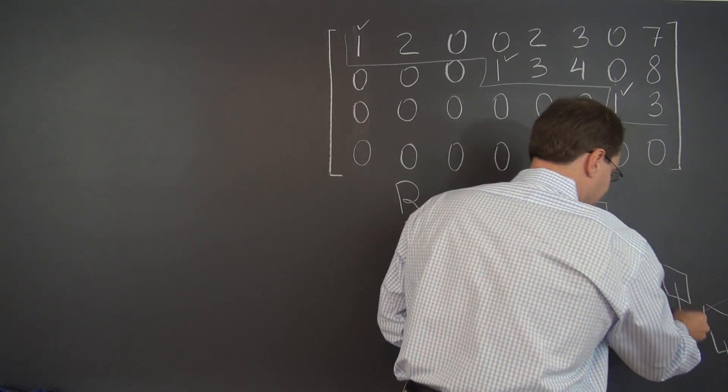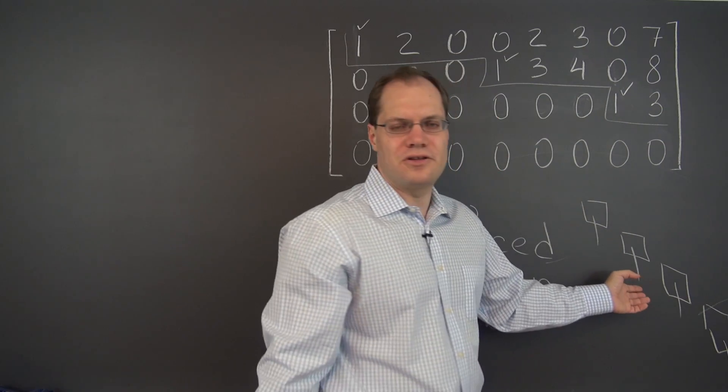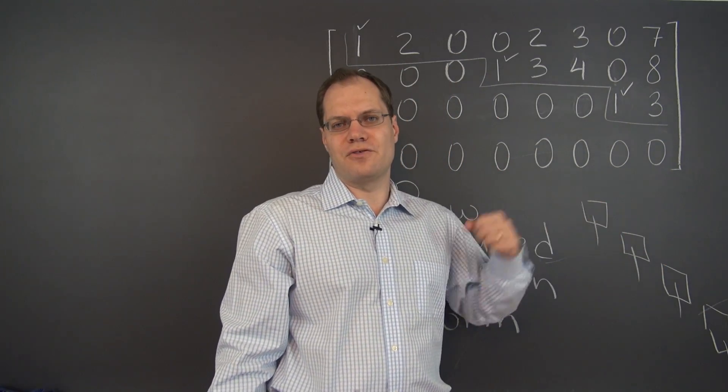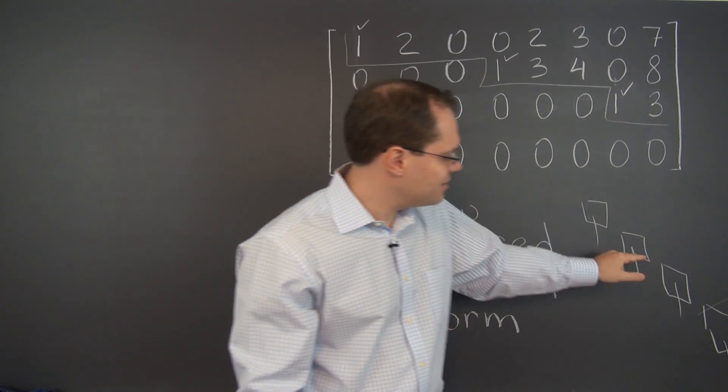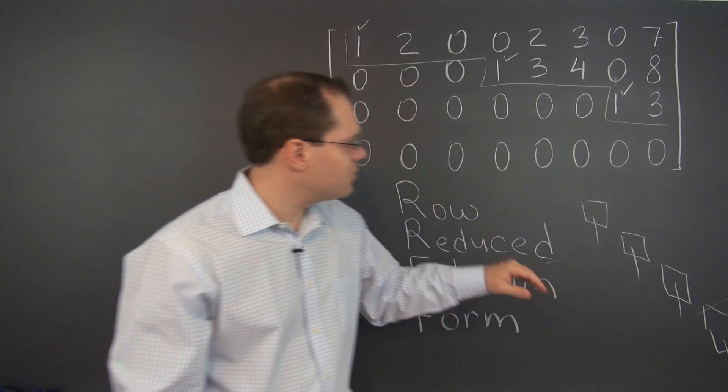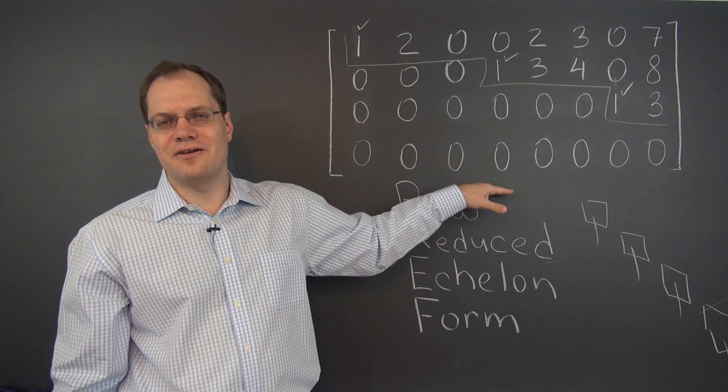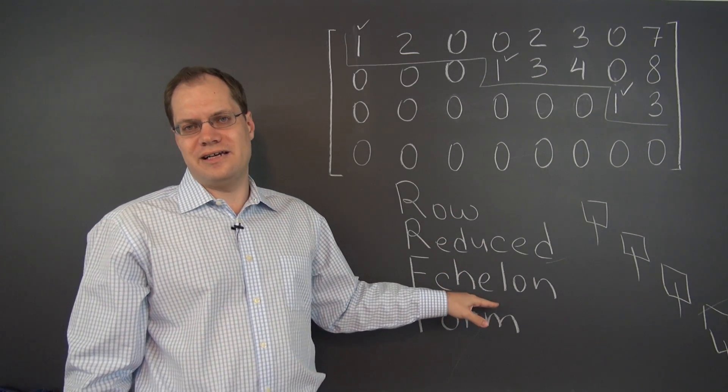So if tanks are facing this way, this would be called the right echelon formation. It refers to the formation of troops. And again, it's this characteristic stepwise shape that you can see here. So that's where the word echelon came from.